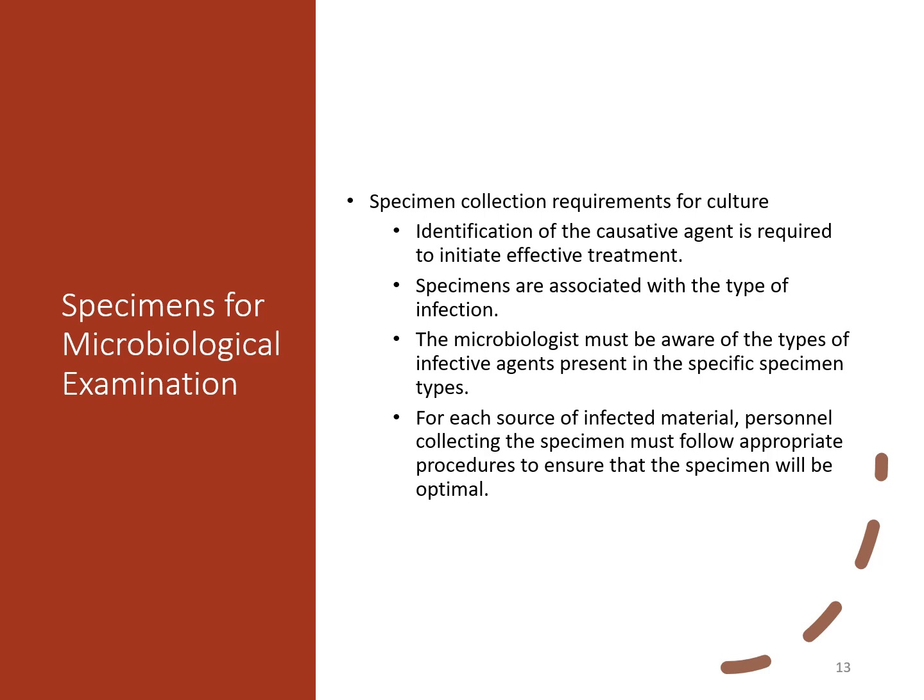The microbiologist must be aware of the types of infective agents present in the specific specimen type. With stool cultures, you're looking for particular organisms like Salmonella or Shigella. You don't want to be overwhelmed by a plate that obviously has a lot of bacteria — normal flora will also grow on the plate. You're not working up the normal flora but looking for the pathogenic organism that could have infected the patient.